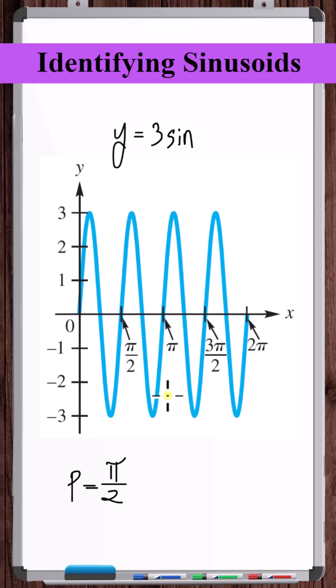The period of the basic sine and cosine function is 2 pi. Therefore, to get to pi over 2, the basic period was scaled down by a factor of 4.